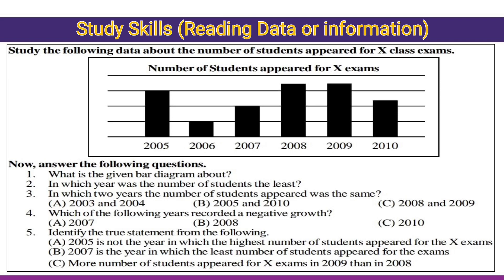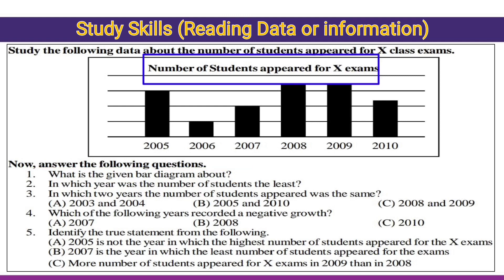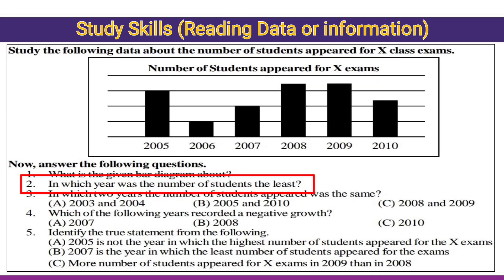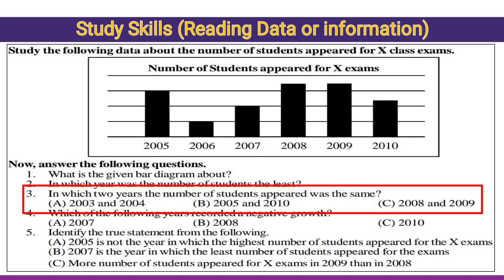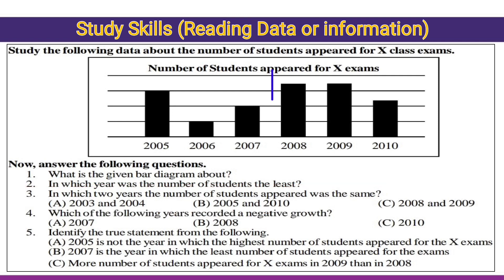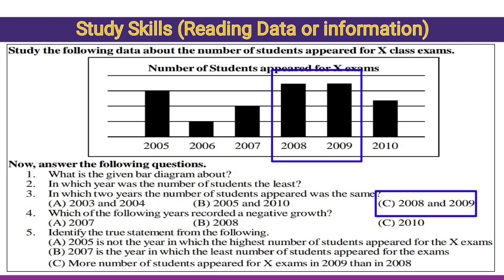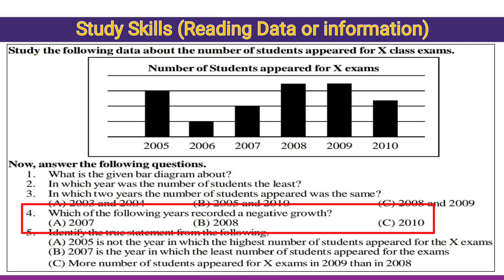Let's look at one more study skill: bar graph or bar diagram. Study the following data about the number of students appeared for a 10th class examination. First question: what is the given bar diagram about? 'The given bar diagram is about the number of students appeared for the 10th exam.' Second question: in which year was the number of students the least? In 2006 — very few. Third question: in which two years was the number of students appeared the same? In 2008 and 2009, option C is absolutely right.